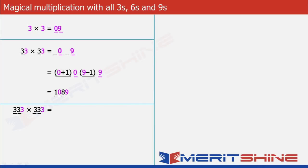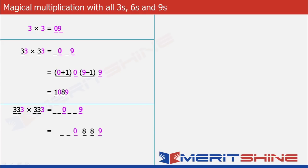Let us extend it a bit further by trying 333 × 333. Now since we have 2 extra 3's, we will add 2 extra blanks to the left of 9 and 2 blanks to the left of 0. We will proceed as earlier. The 2 blanks to the left of 9 will be decreased by 1 and the 2 blanks to the left of 0 will be increased by 1, thereby giving us 110889 as our answer.